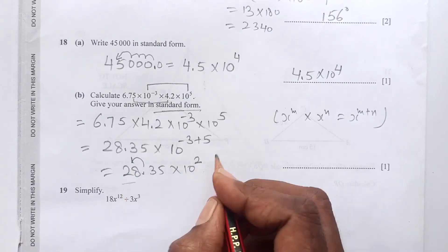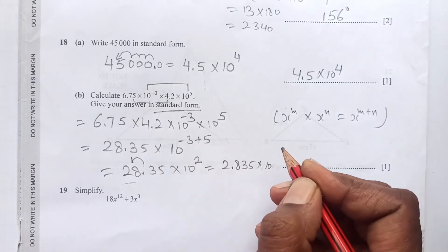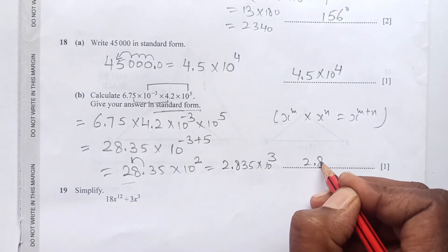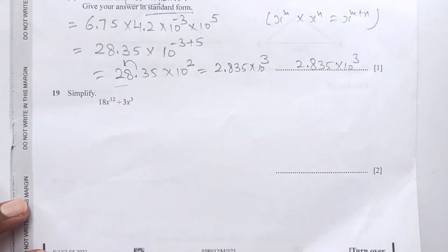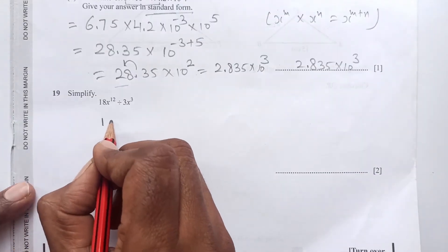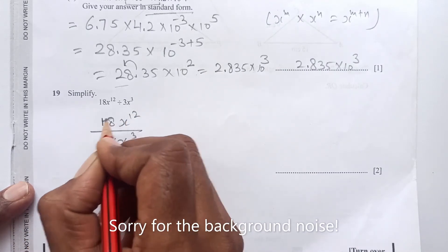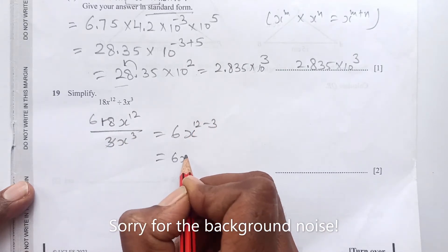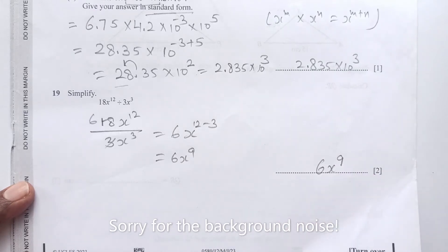28.35 × 10² is not in standard form, so we shift one digit: 2.835 × 10³. That is the answer to 18b. Question 19: simplify 18x¹² ÷ 3x³. 18 ÷ 3 = 6, and x¹² ÷ x³ = x⁹. The answer is 6x⁹.